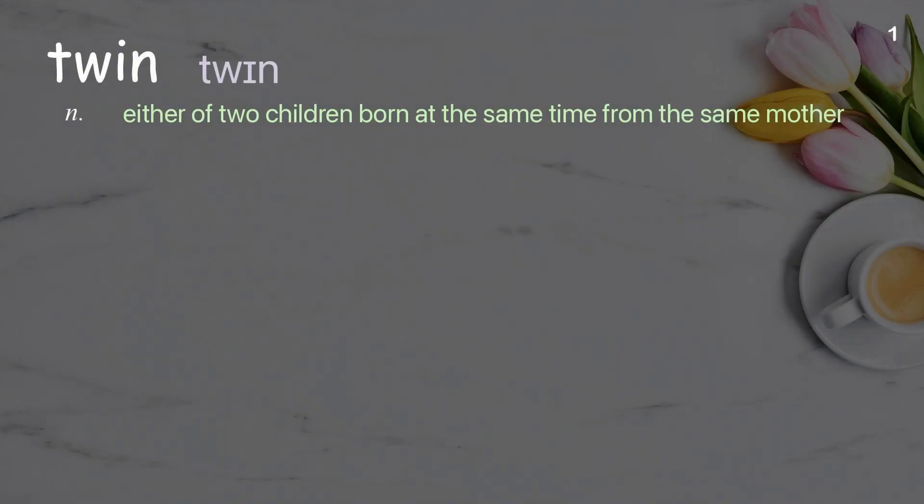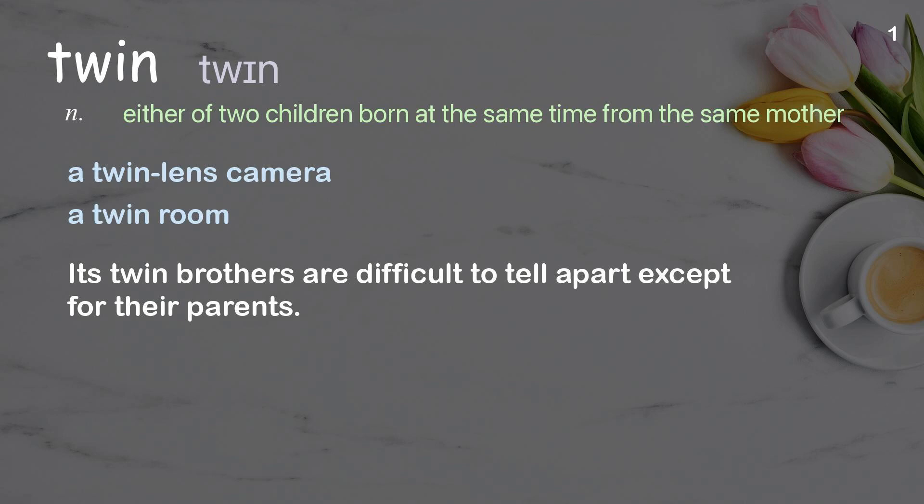Twin: Either of two children born at the same time from the same mother. Examples: a twin lens camera, a twin room. Its twin brothers are difficult to tell apart except for their parents.